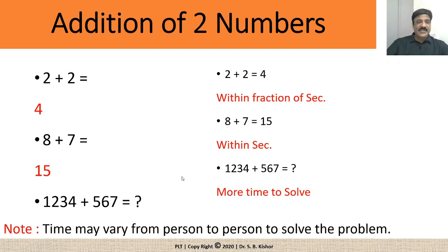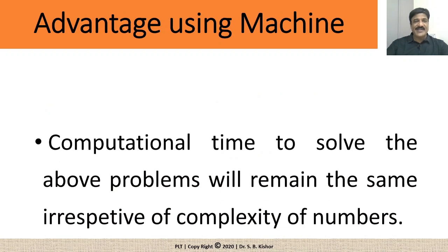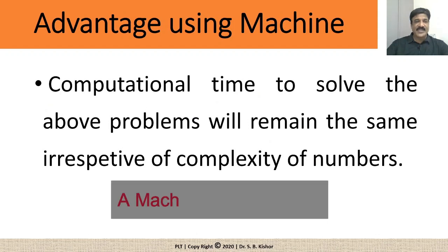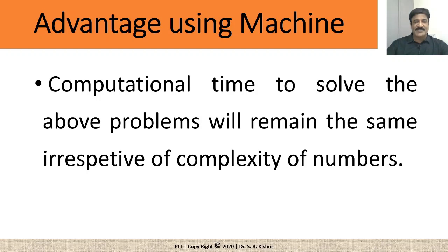So, let us see one by one again. 2 plus 2 you have given an answer very quickly. In case of the second case you have taken some seconds, while in case of the third you have required more time in order to solve this particular addition. So, obviously it means the time may vary from person to person in order to solve this particular problem. Now, when you are going to solve the same problem using a machine, it will take the same amount of time.